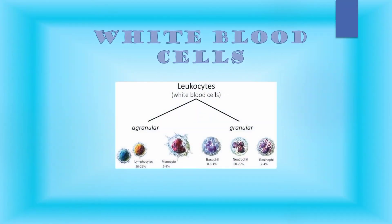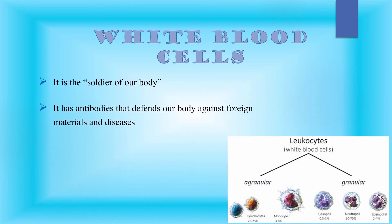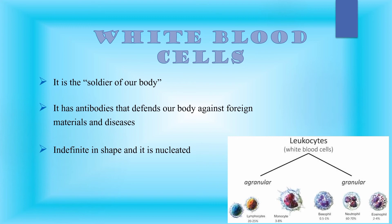Now let's talk about white blood cells, or what we call leukocytes. They are described as the soldiers of the body because their function is to defend the body against infectious diseases and foreign materials by phagocytosis or by secreting antibodies. Unlike red blood cells, white blood cells have indefinite shapes and they are nucleated, meaning they have a nucleus. The shape of their nuclei and the presence or absence of granules in the cytoplasm are used in identifying white blood cells. White blood cells with granules are called granulocytes, while those without granules are called agranulocytes.